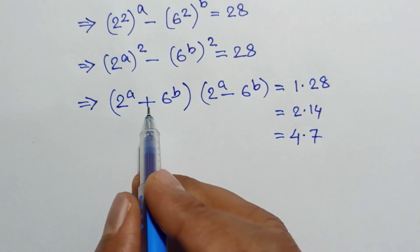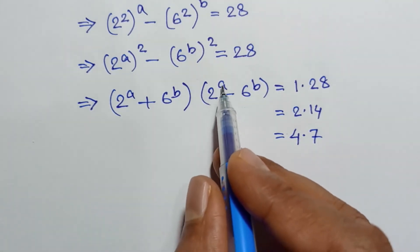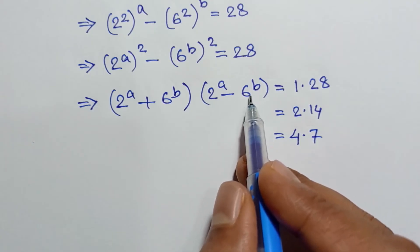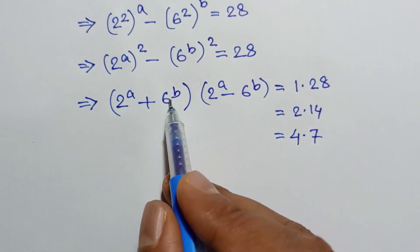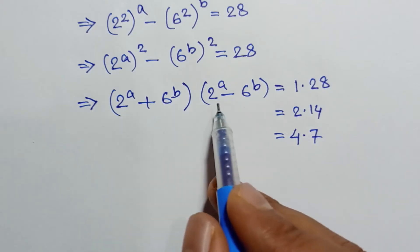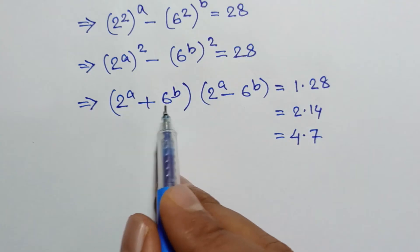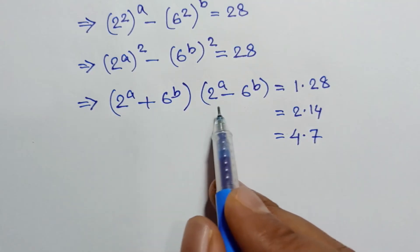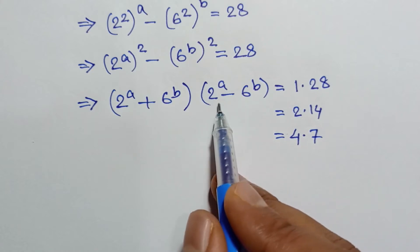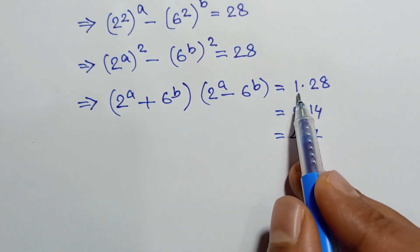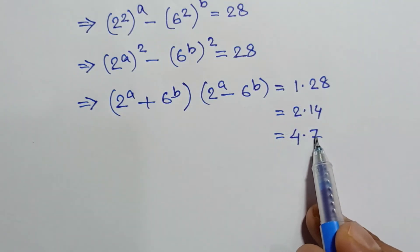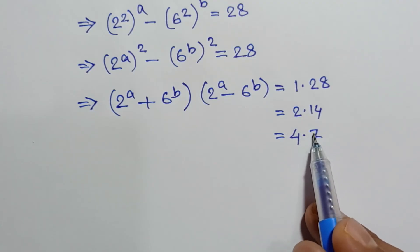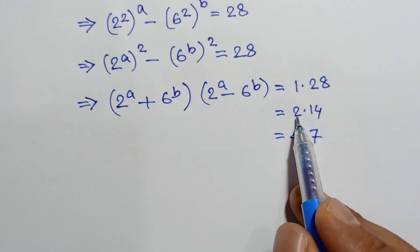Note that 2^a plus 6^b is greater than 2^a minus 6^b. Also, 2^a is an even number and 6^b is also an even number, so the sum or difference of these two even numbers is always even. Therefore, 2^a plus 6^b and 2^a minus 6^b are both even. This rules out 1 times 28 (since 1 is not even) and 4 times 7 (since 7 is not even).